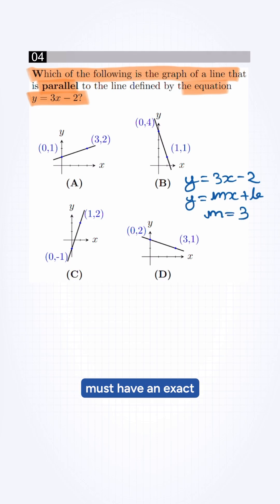So for a parallel line, must have an exact same slope. Therefore, the required correct slope option will be m is equal to 3.